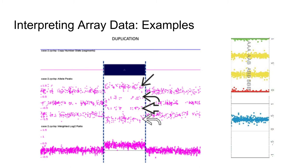Another example: the log2 ratio for this segment of chromosome hovers above zero at around 0.5, indicating more genetic material at this segment. Because of the excess genetic material, an additional permutation is introduced to the SNP array. The allelic tracks display all possible allelic combinations in a duplication: AAA, AAB, ABB, and BBB. This is what a duplication looks like on a SNP array.